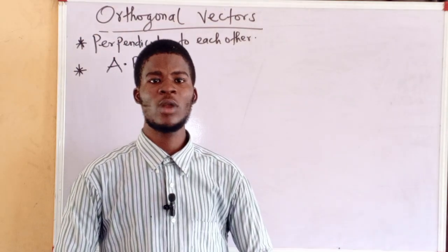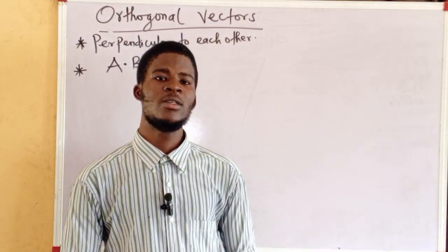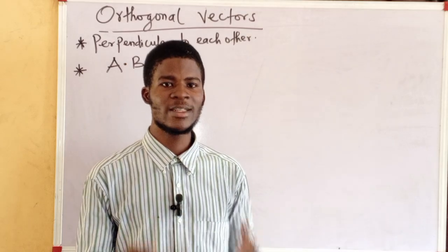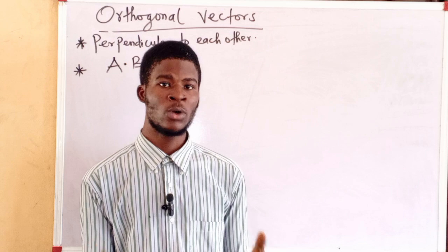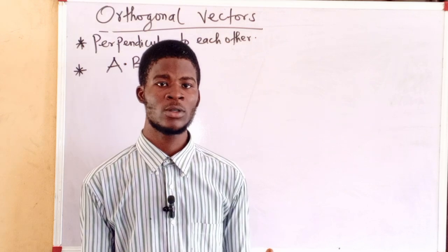So, two vectors that are perpendicular to each other, that is, the angle between them is 90 degrees, are called orthogonal vectors. And their dot product or their scalar product equals zero.